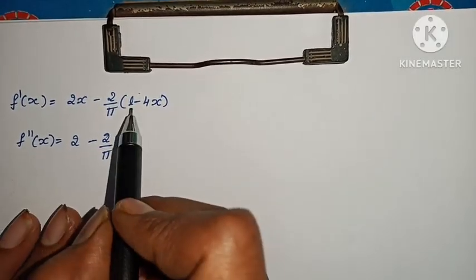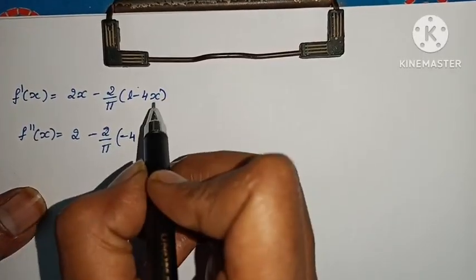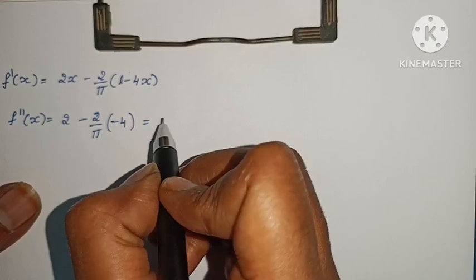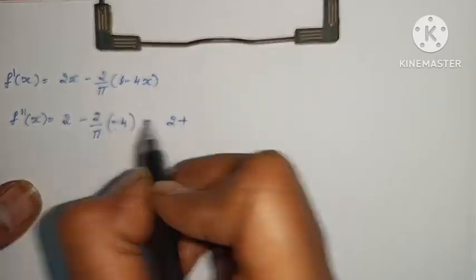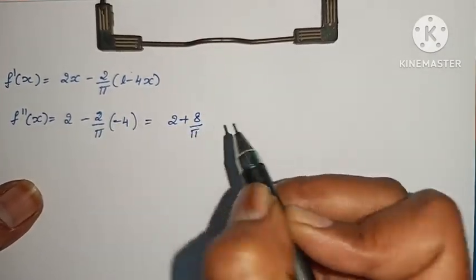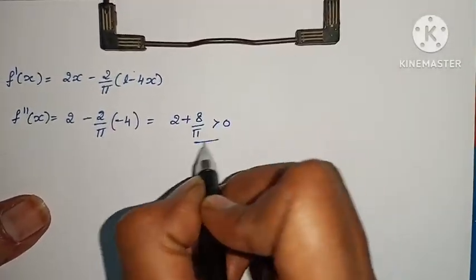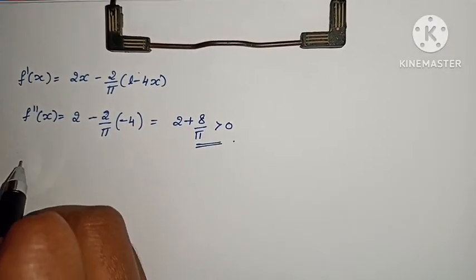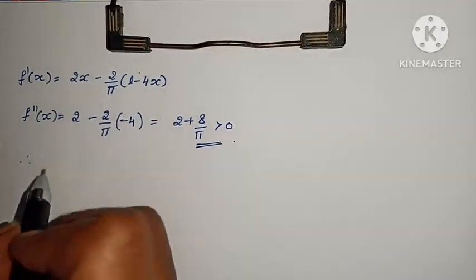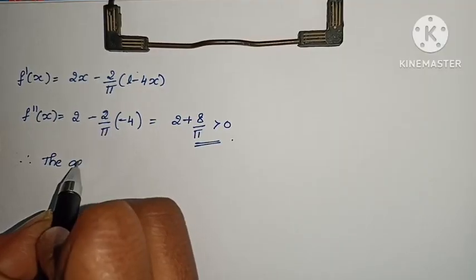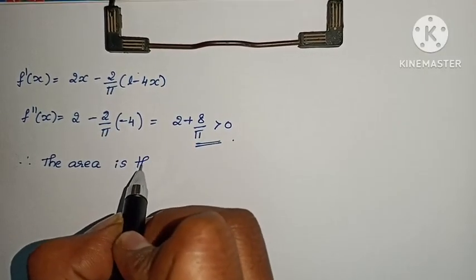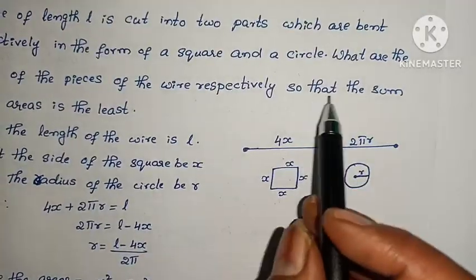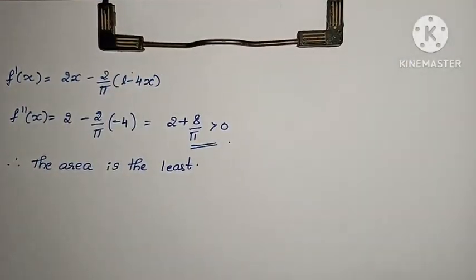Finding f''(x): since the constant term differentiates to 0, f''(x) = 2 + 8/π, which is positive. Therefore f''(x) > 0, confirming that the area is the least (minimum) at x = L/(π + 4).